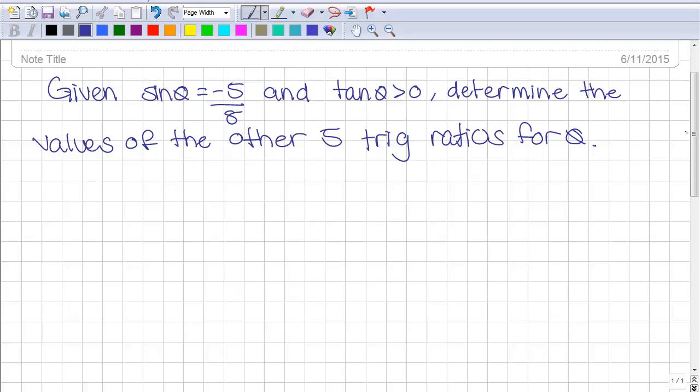Hi, so here's the question. Given sine theta equals negative 5 over 8 and tan theta greater than 0, determine the values of the other five trigonometric ratios for theta.